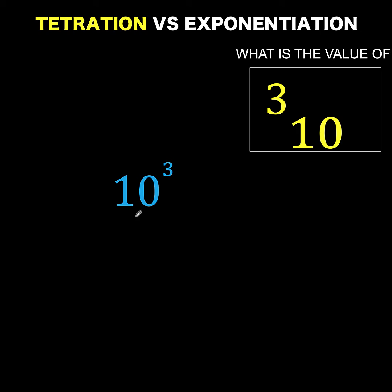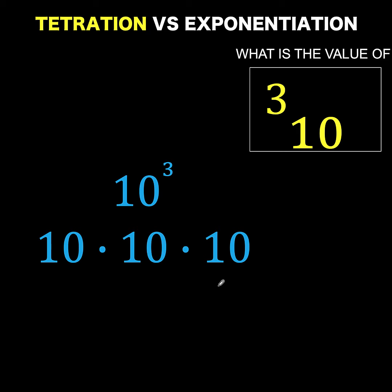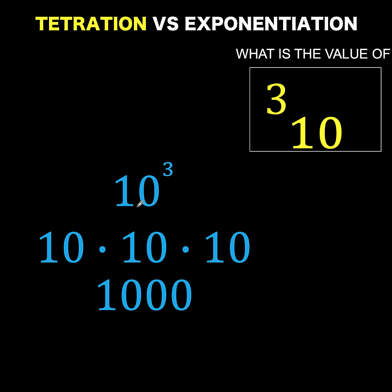So when we have 10 to the third, this means we multiply the base 10 three times. And this is equal to 10 times 10 times 10, which is equal to 1,000. Notice that when 10 is raised to any exponent, this exponent 3 corresponds to the number of zeros after 1 in the expanded form of 10 to the third.